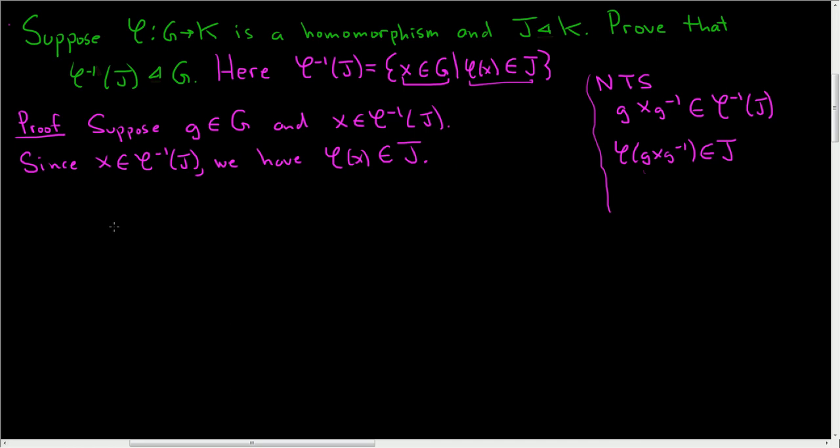So now we just need to show that φ(gXg⁻¹) is in J. If we do that, then it follows that gXg⁻¹ is in the inverse image of J. So φ is a group homomorphism. So we can write this as φ(g) times φ(X) and then φ(g⁻¹).